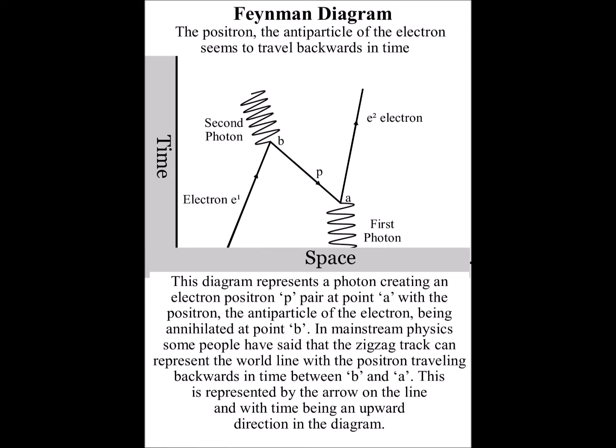some people have said that the zigzag track can represent the world line, with the positron traveling backwards in time between point B and A. This is represented by time being an upward direction in the diagram, with the line representing the positron pointing downwards.